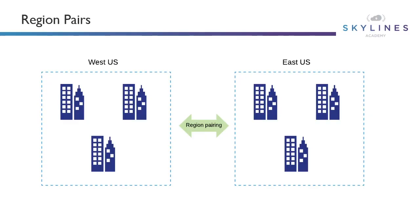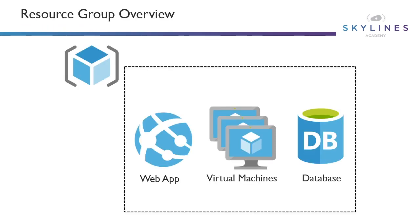In addition, we also have region pairs. If Microsoft is going to update one of the Azure data centers, they'll only do it one region in the pair at a time. For example, West US is paired with East US; North Central is paired with South Central. So if they're patching underlying hosts that support your machines, they'll only patch one region at a time. If your redundant workload is running in another region as part of a high availability disaster recovery solution, it will continue to run for you.